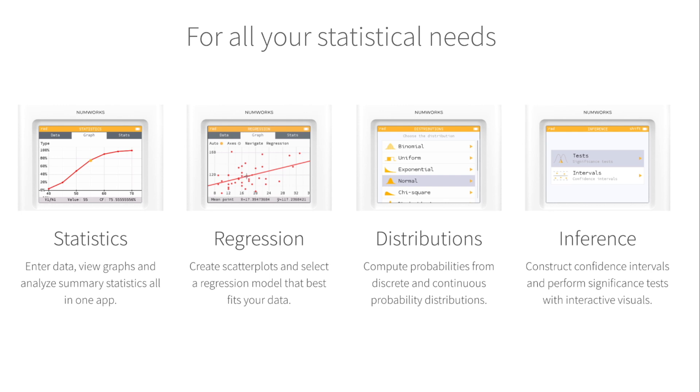The statistics app is great for one variable data sets where you can view graphical displays such as box plots and histograms as well as summary statistics. The regression app is used to analyze two variable data sets by constructing scatter plots, adding regression models, and viewing residual plots. In the distribution app you can use known probability distributions to compute probabilities with great visuals. And finally the inference app provides an intuitive way to construct confidence intervals and perform hypothesis tests. Let's dig into these apps.